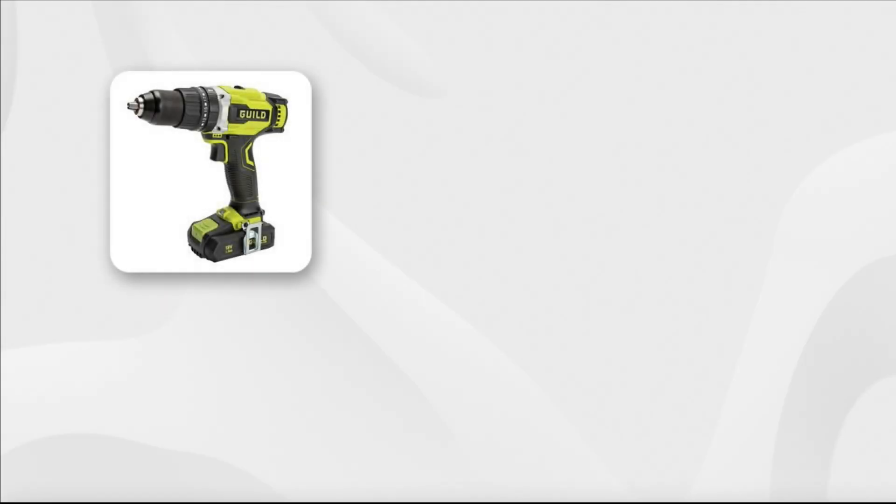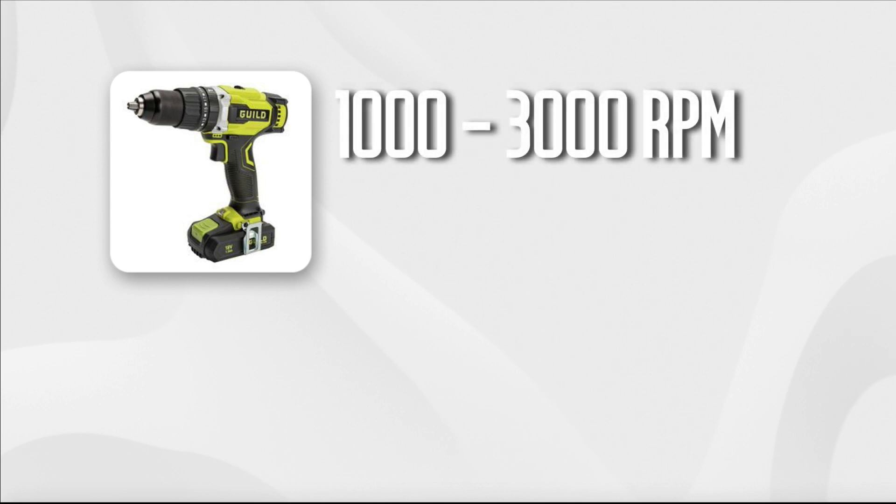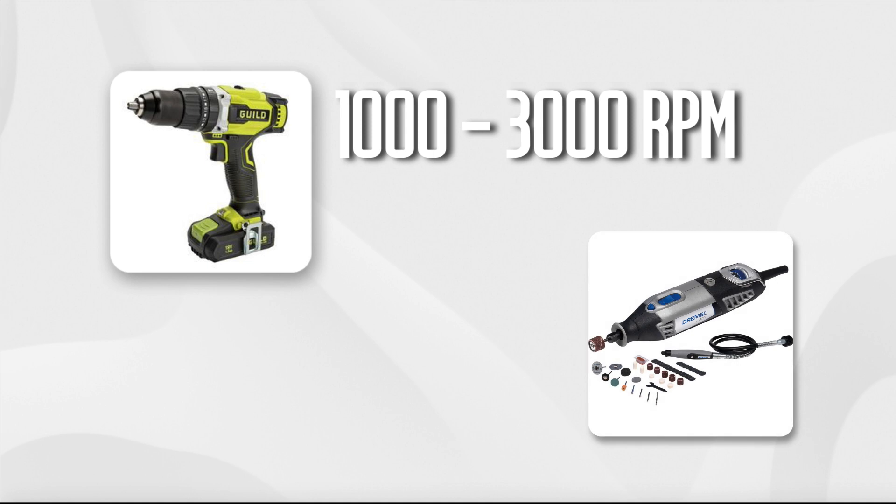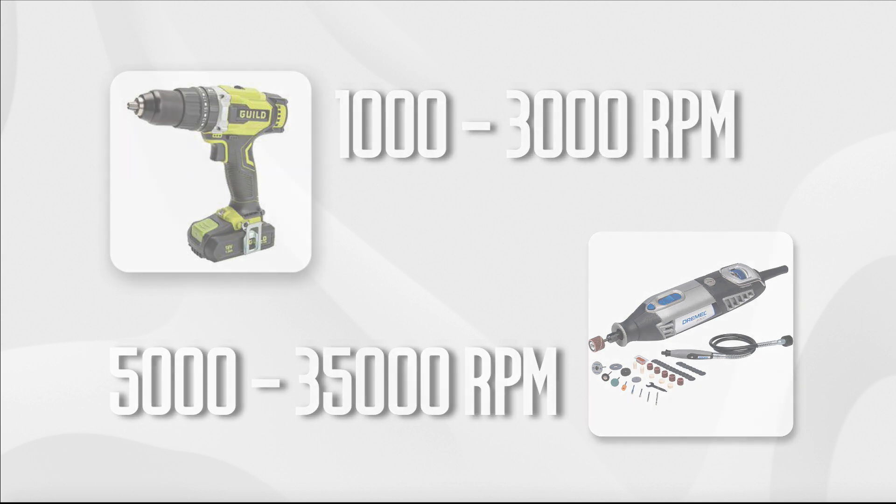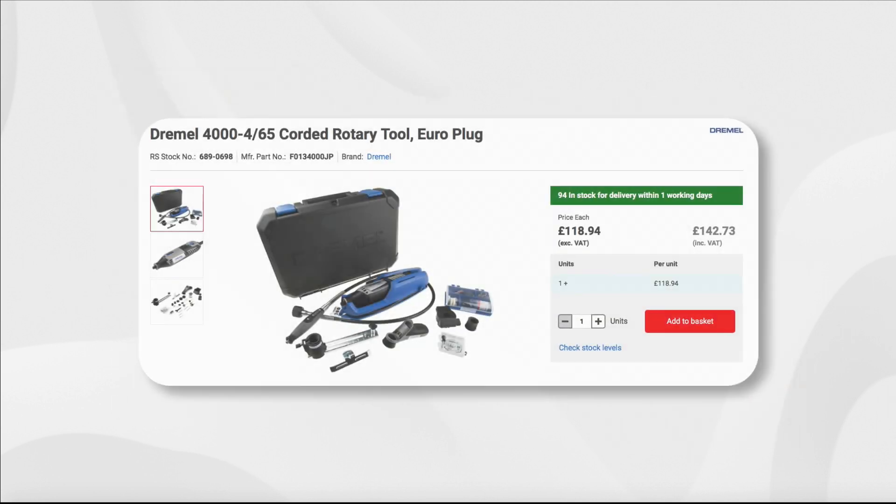To put this into perspective, most domestic drills operate between a thousand and three thousand RPM, while the Dremel hand tool, which is already a favorite among locksporters, can be cranked all the way up to 35,000 RPM, and this is also of course reflected in the price.